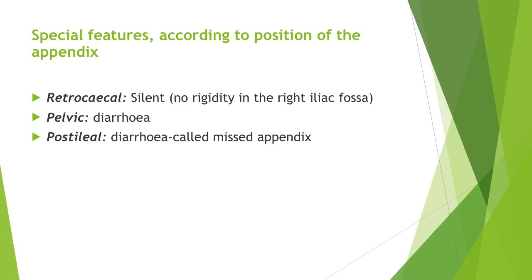With a pelvic appendix, early diarrhea may result from the inflamed appendix being in contact with the rectum. When the appendix lies entirely within the pelvis, there is complete absence of abdominal rigidity and tenderness over McBurney's point. With a postileal appendix, the pain may not shift, diarrhea is a feature, there is marked retching, and tenderness is ill-defined.